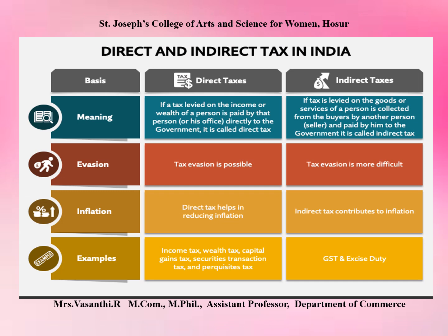Key differences: direct tax is levied on income and paid directly to the government. Indirect tax is levied on goods or services and collected from buyers by another person, then paid to the government. Regarding tax evasion, it is possible in direct taxes but more difficult in indirect taxes. Indirect taxes help reduce evasion, while income tax can contribute to inflation. Examples of direct taxes are income tax, wealth tax, and capital gains tax. Examples of indirect taxes are GST and excise duty.